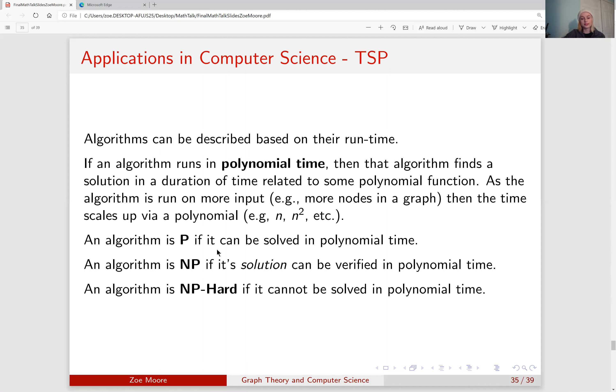So an algorithm is labeled as P if it can be solved in polynomial time and an algorithm is labeled NP if its solution can be verified in polynomial time. This means that it might not be able to be solved in polynomial time, but if an algorithm is given a solution to a problem and that solution can be double checked and confirmed as correct, then that would be NP. And an algorithm is NP-hard if it cannot be solved in polynomial time.